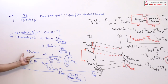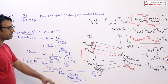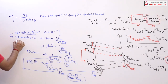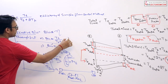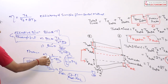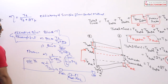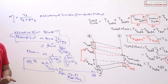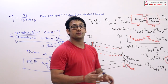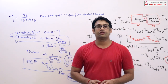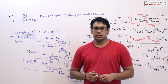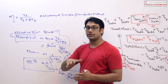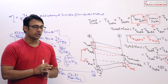Throughput is also directly proportional to the length of the data packet, which you can verify from the formula. This means if the length of the data packet you are sending is very large — if you are sending very large chunks of data — then your effective bandwidth or throughput of the network will increase.